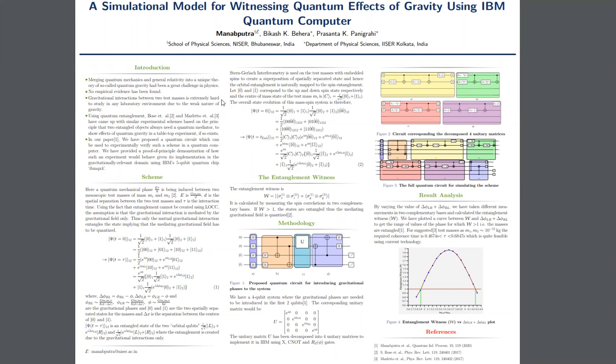Using Stern-Gerlach interferometry, we have first created an entanglement between the mass eigenstates and now using Stern-Gerlach interferometry, we are transferring these mass eigenstates to the spin eigenstates. Let's say we have an electron. It has both mass and spin.